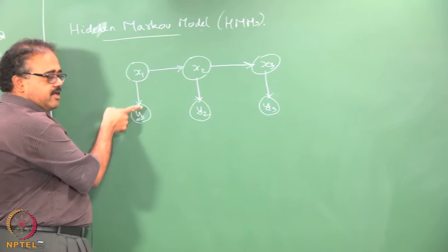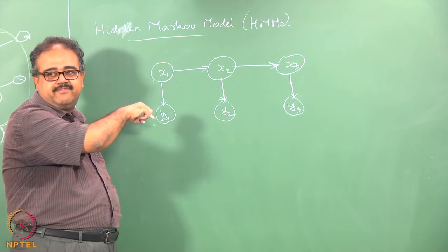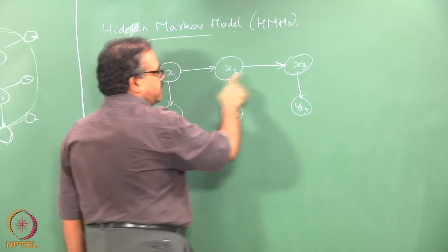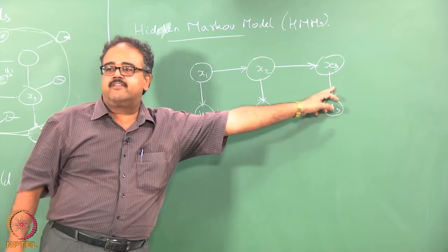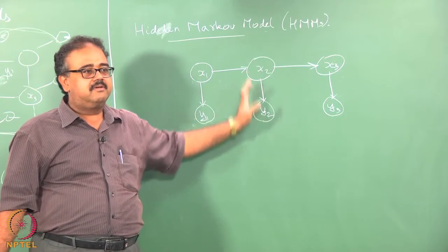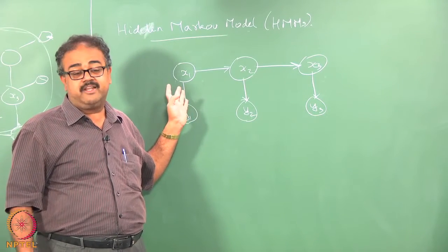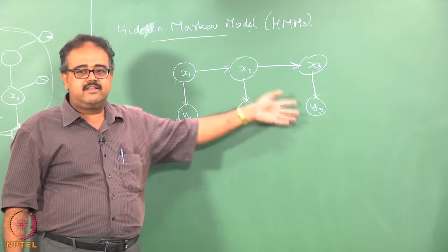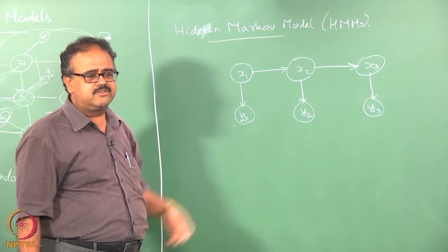One thing to note: in a hidden Markov model, xi gives rise to yi, not the other way around. The x's are the hidden labels — you don't see them, but that part is Markov. Whatever you observe (the words) is influenced only by the labels. This is a very strong independence assumption, but it turns out it works in many situations, much like naive Bayes works. Of course it also fails in many situations, which is why people have come up with other models.